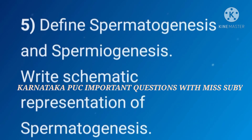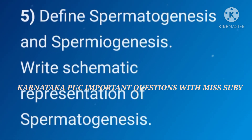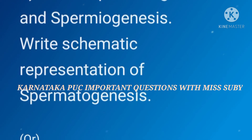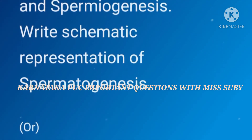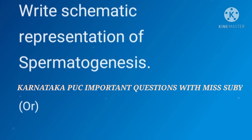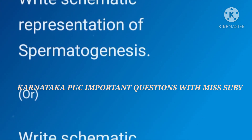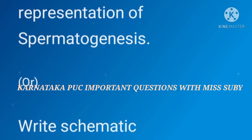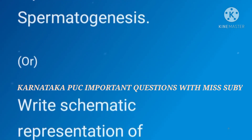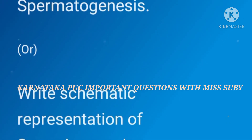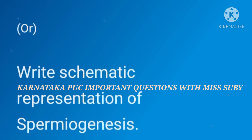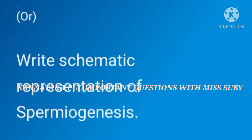The fifth important question is: define spermatogenesis and spermiogenesis, and write a schematic representation of spermatogenesis. You have to give definitions of both spermatogenesis and spermiogenesis, and draw the schematic representation of spermatogenesis as well as spermiogenesis.